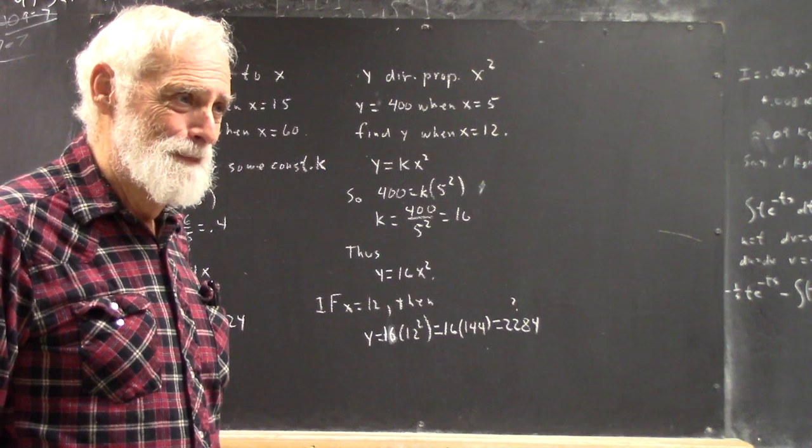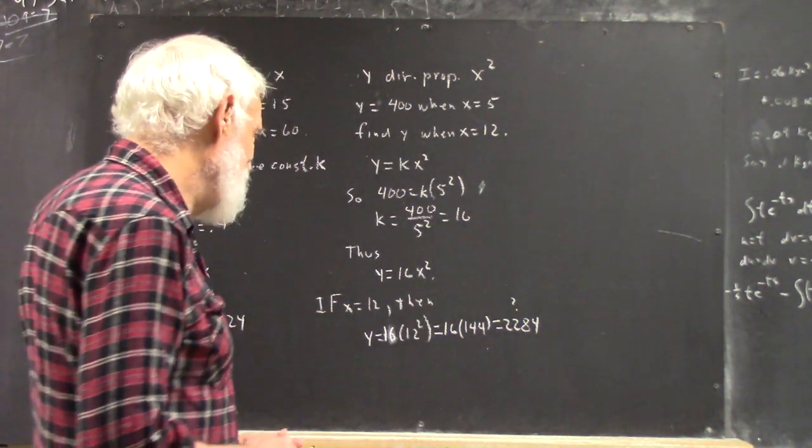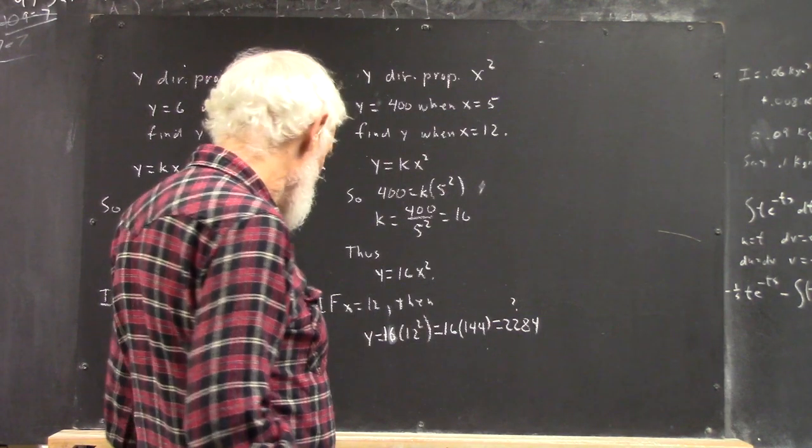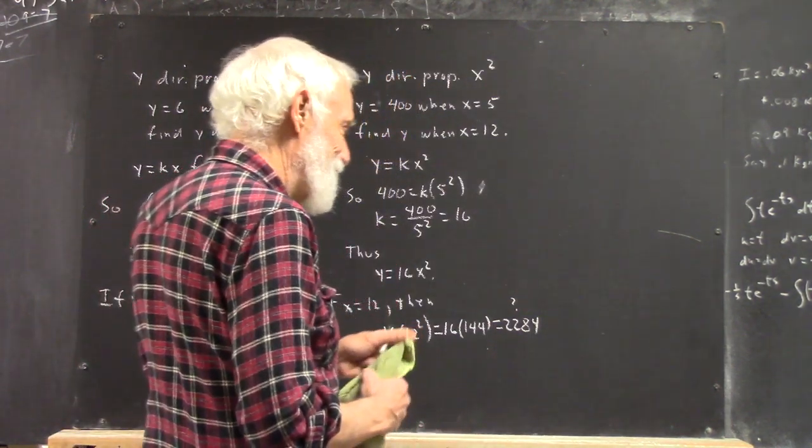And 2240 and 64 is 2304. Everybody knows that. It's not 2284. I'm glad I checked. I almost made a mistake.